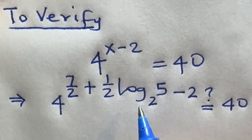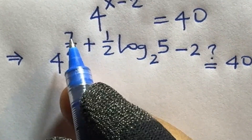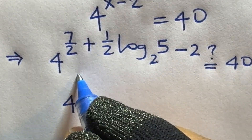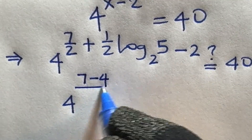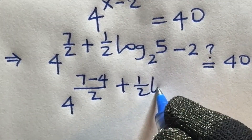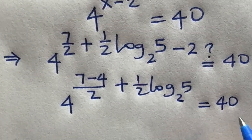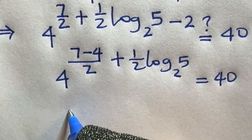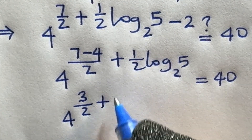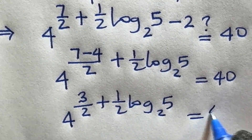I will tidy up the exponent: this becomes 4 raised to power 7 over 2 minus 2, which gives 7 minus 4 over 2, that is 3 over 2, then plus 1 over 2 log 5 base 2, is equal to 40.